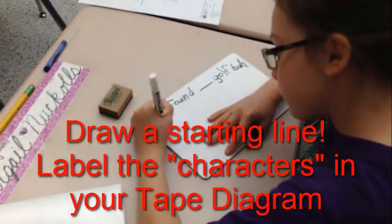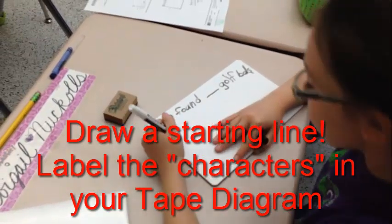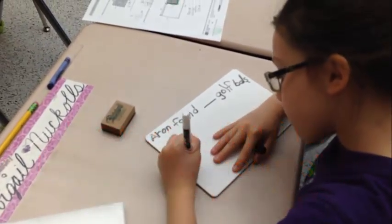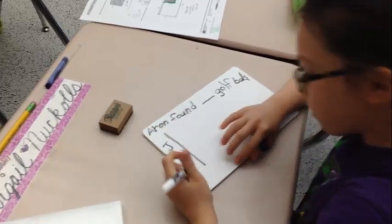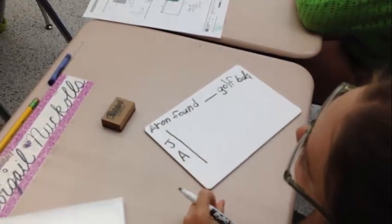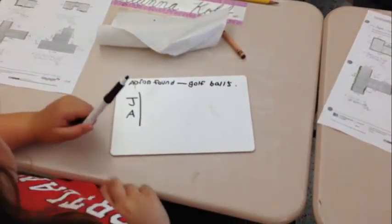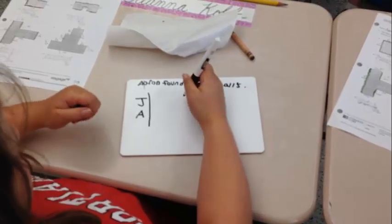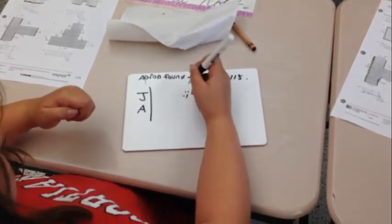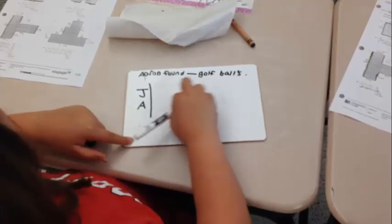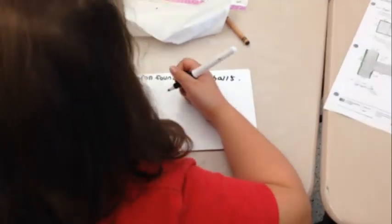Okay. Now, what information do we know? Lily, what do we know? What does the word problem tell us? They found 11 golf balls. They found 11 golf balls all together. And what else do we know?